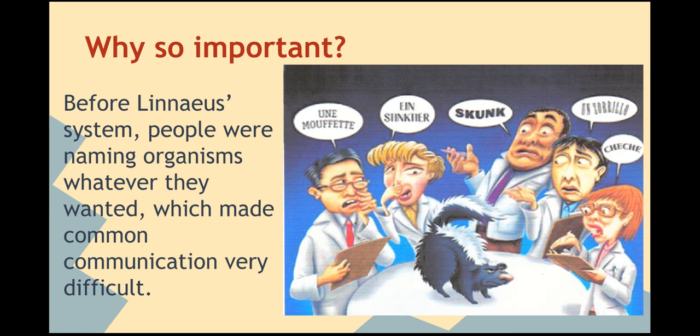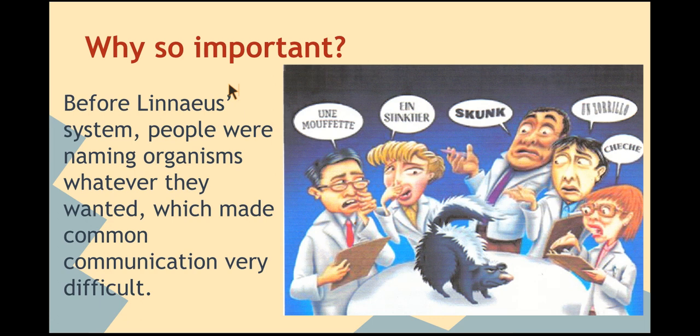So why is this so important? Why is the Linnaeus system so revolutionary? Before Linnaeus' system, people were pretty much naming organisms whatever they wanted, and it was the same across cultures. A person in one culture might see a dog and give it one name, and in another culture they'd give it a different name. You ended up with a lot of names that meant nothing to people in other cultures, which made communication between scientists almost impossible.